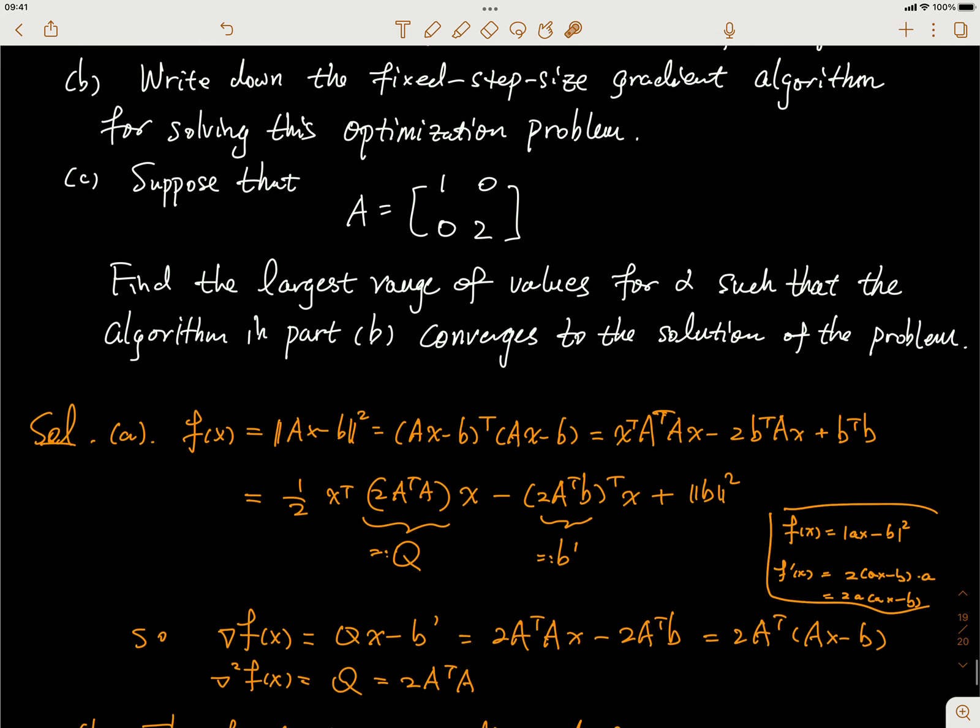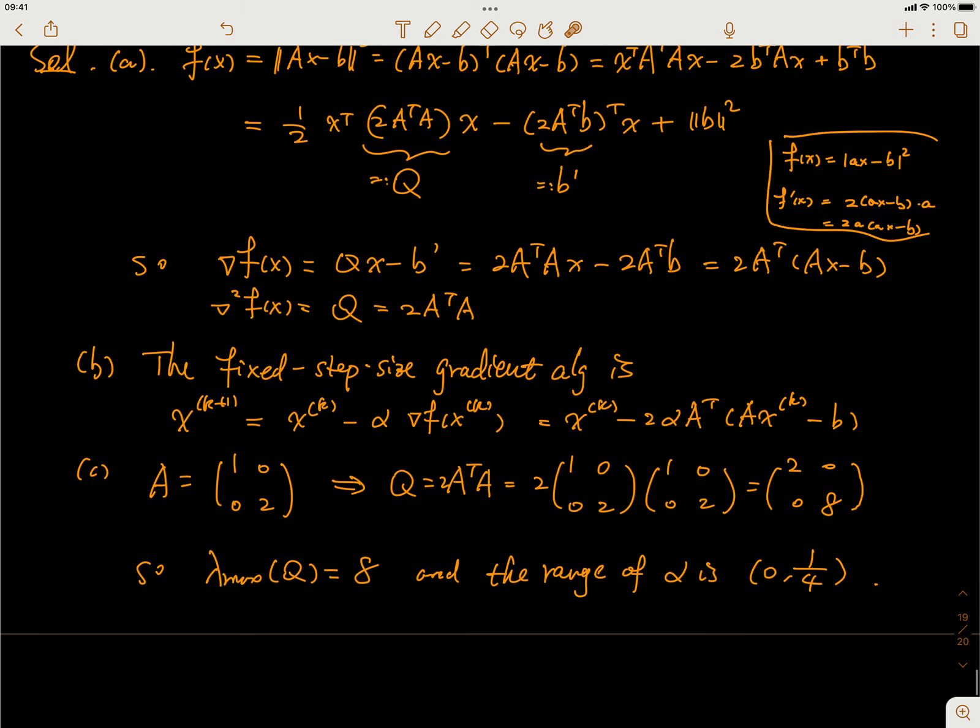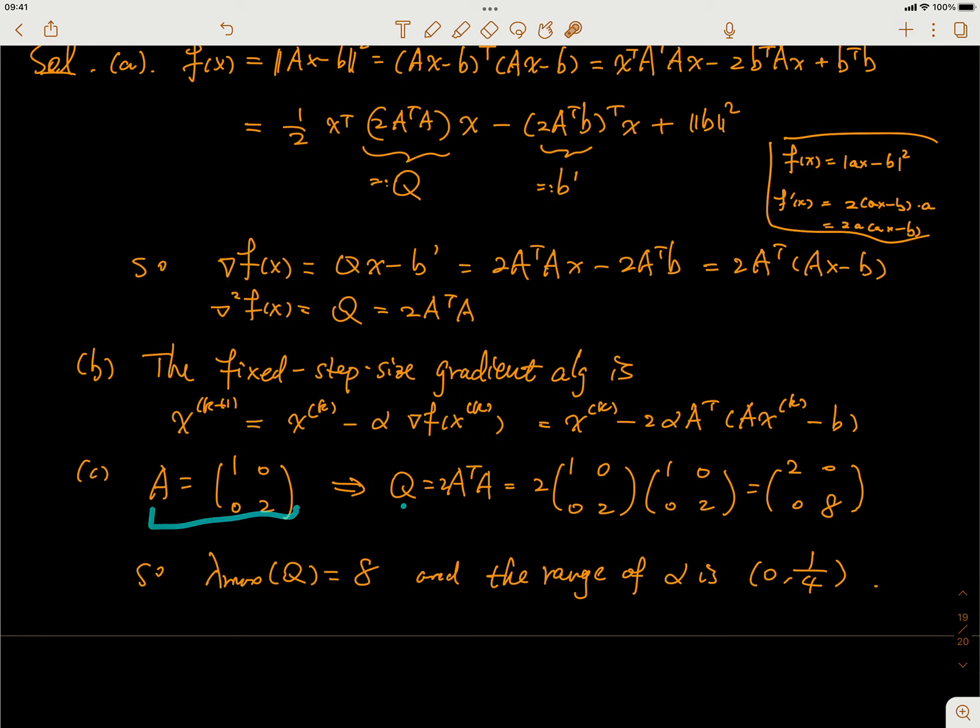Last question. Suppose we know the matrix A is [1 0; 0 2], and we need to find the largest eigenvalue of Q. Now Q, since A is that, Q is 2 times A^T A. So Q is this, and the largest eigenvalue of Q is 8. So the range should be between 0 and 2 over 8, and that is 0 and 1/4.